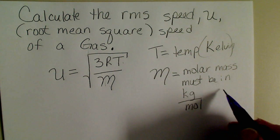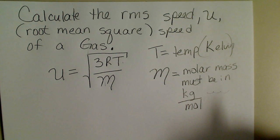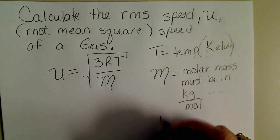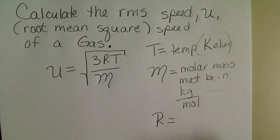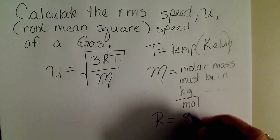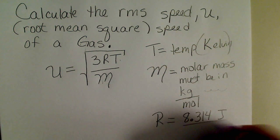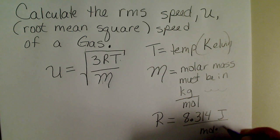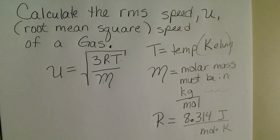To convert from grams to kilograms, we move the decimal three places to the left. The R constant, the universal gas law constant, that we're going to use is the SI unit, 8.314 joules per mole per degree Kelvin.